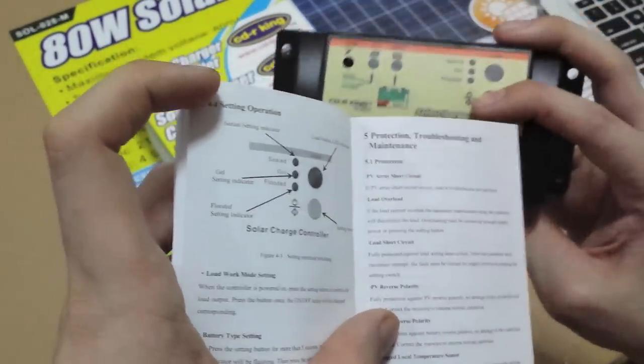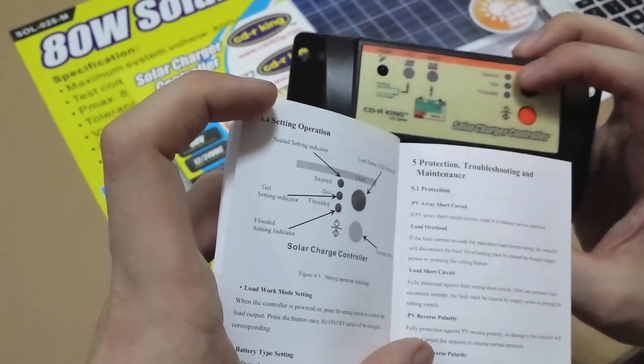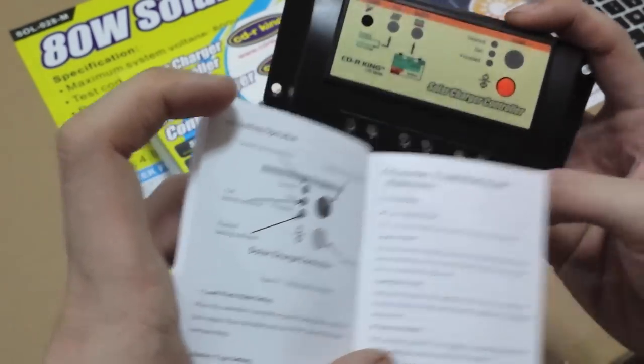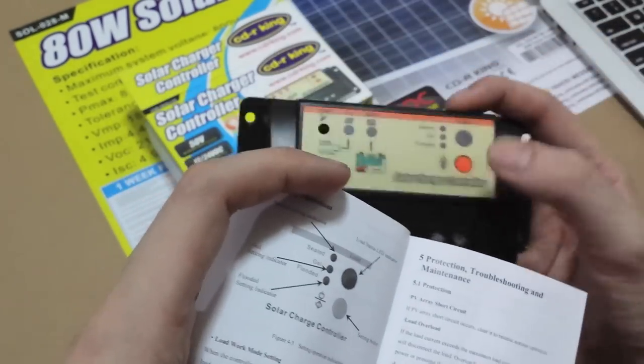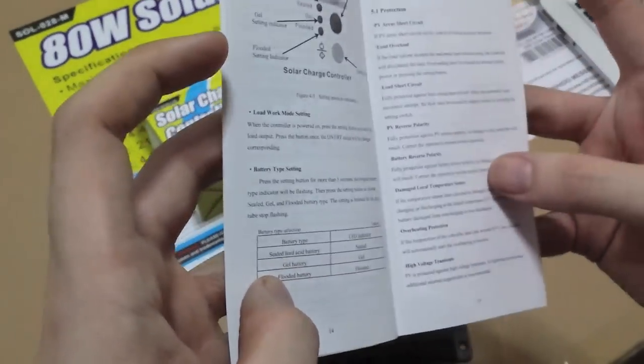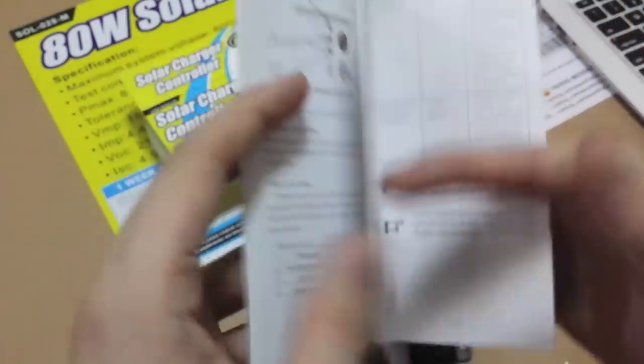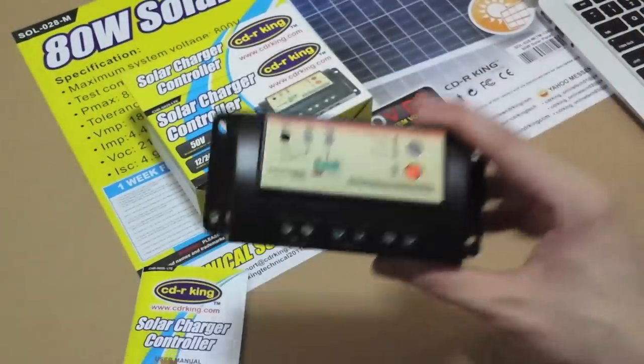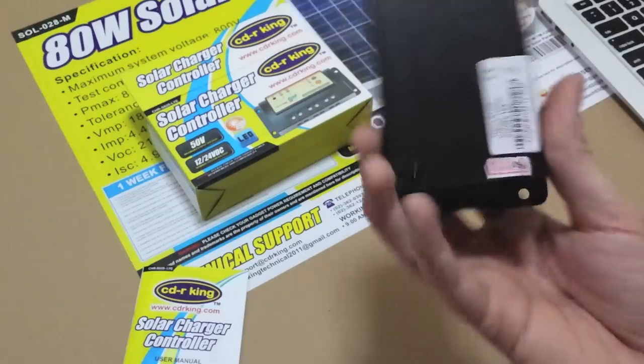Ah, okay, so the button swaps between your different batteries, whether it's sealed, gel, or flooded type. So you probably wouldn't want to accidentally press that. I doubt that would happen, to be honest. What else is there? Not much else. So pretty basic, but should do the job.